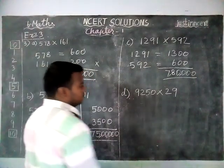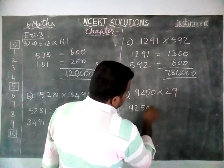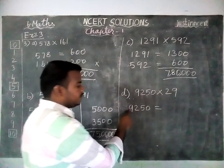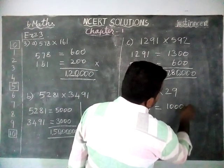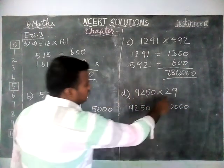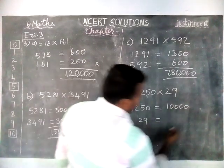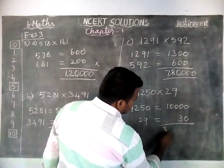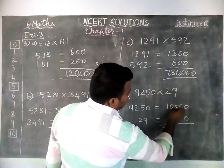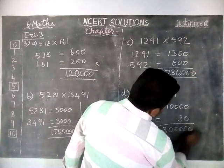Next, option D. 9250, we are going to round off to nearest 1000. When we round off to nearest 1000, we will get 10,000. And this number 29, we round off to nearest 10, which is 30. When we multiply, 3 times 1 is 3. There are 1, 2, 3, 4, 5 zeros. So 3 lakhs is the answer.